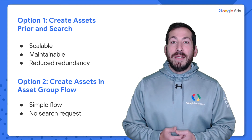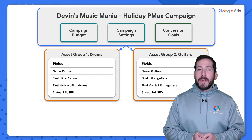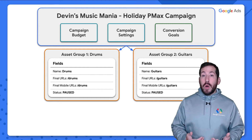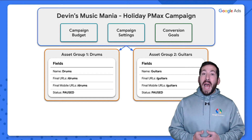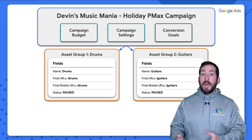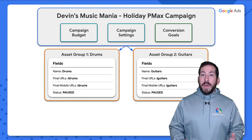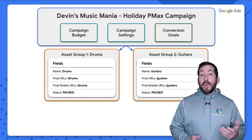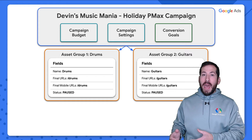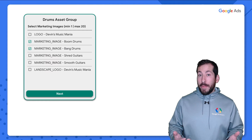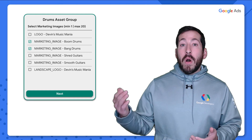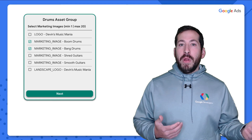Let's illustrate these concepts by revisiting my fictitious business, Devin's Music Mania, introduced in episode 5. We're running a holiday campaign and I have an asset group called 'Drums.' I have a web app built on top of the Google Ads API that steps people through the process of creating a PMax campaign — they fill in fields including asset group information, then go through steps to add assets to that asset group. I'm going to do this one asset field type at a time; for example, let's add marketing images to my Drums asset group.